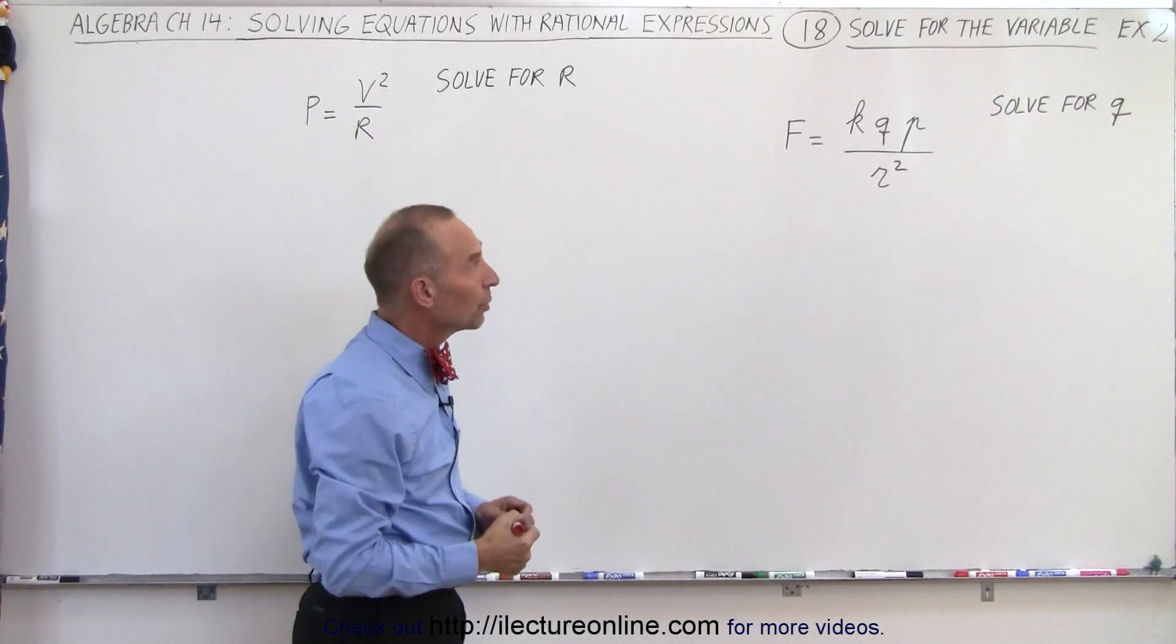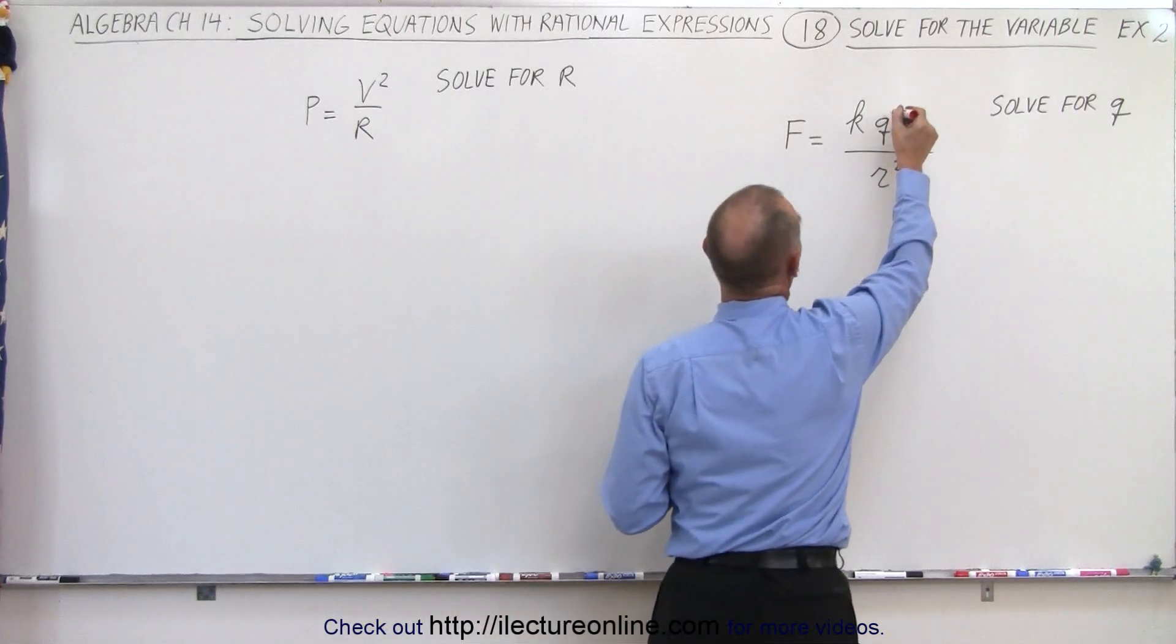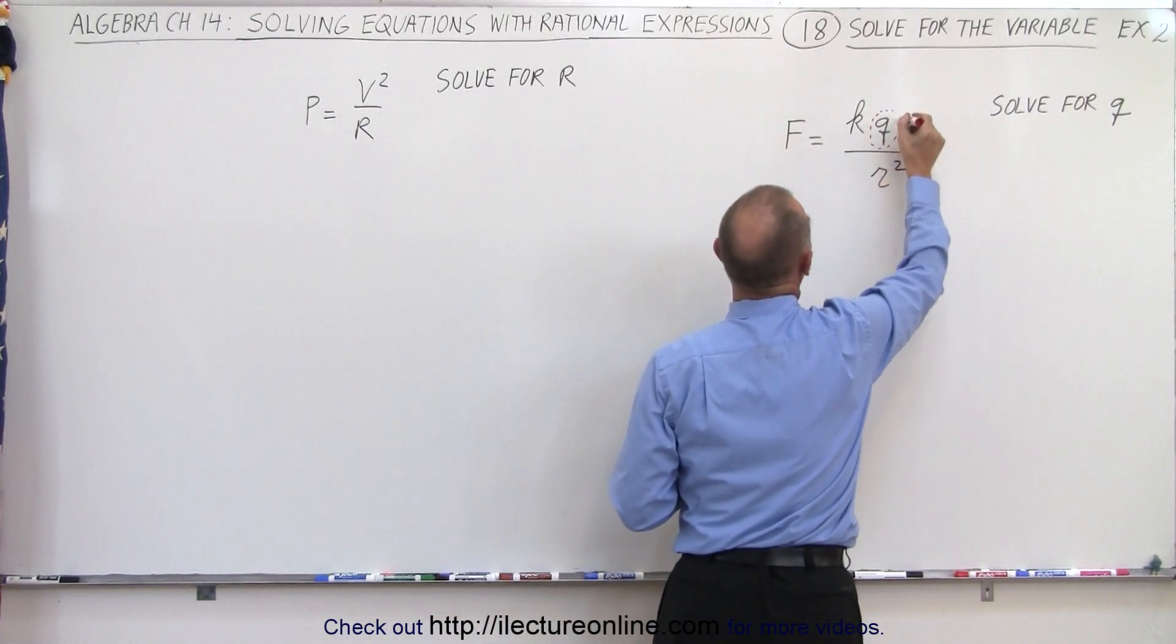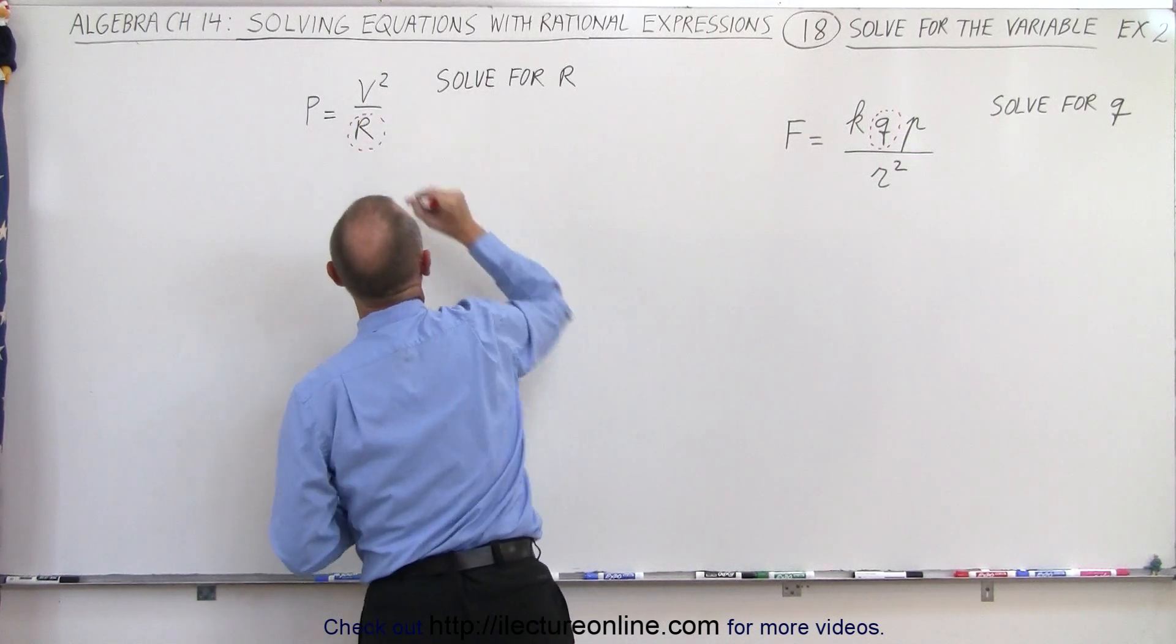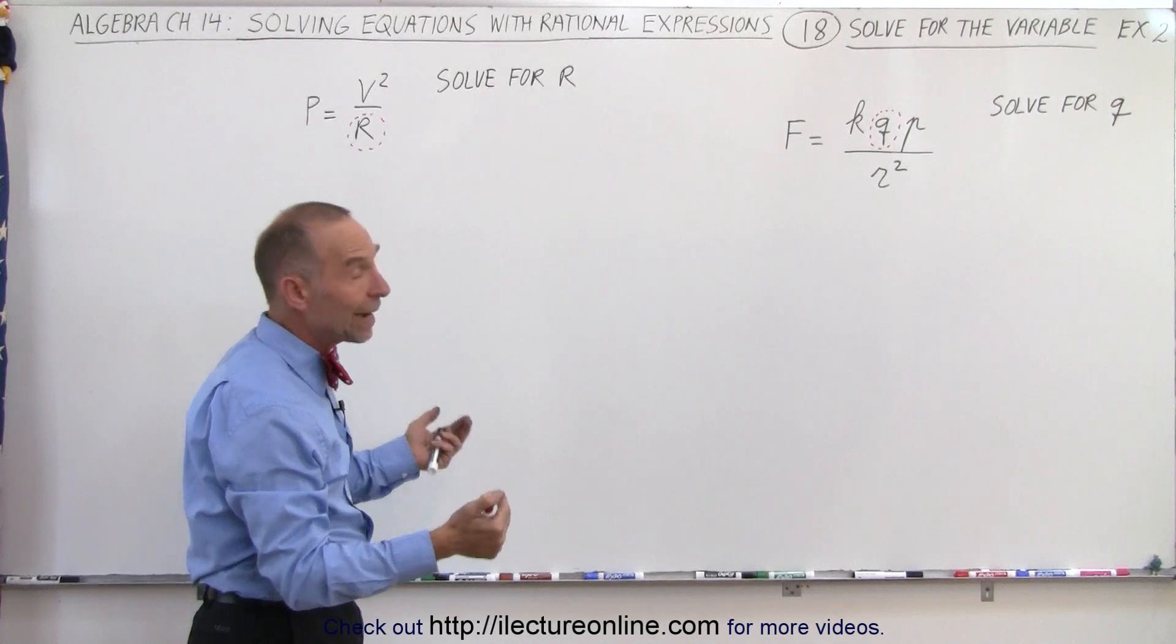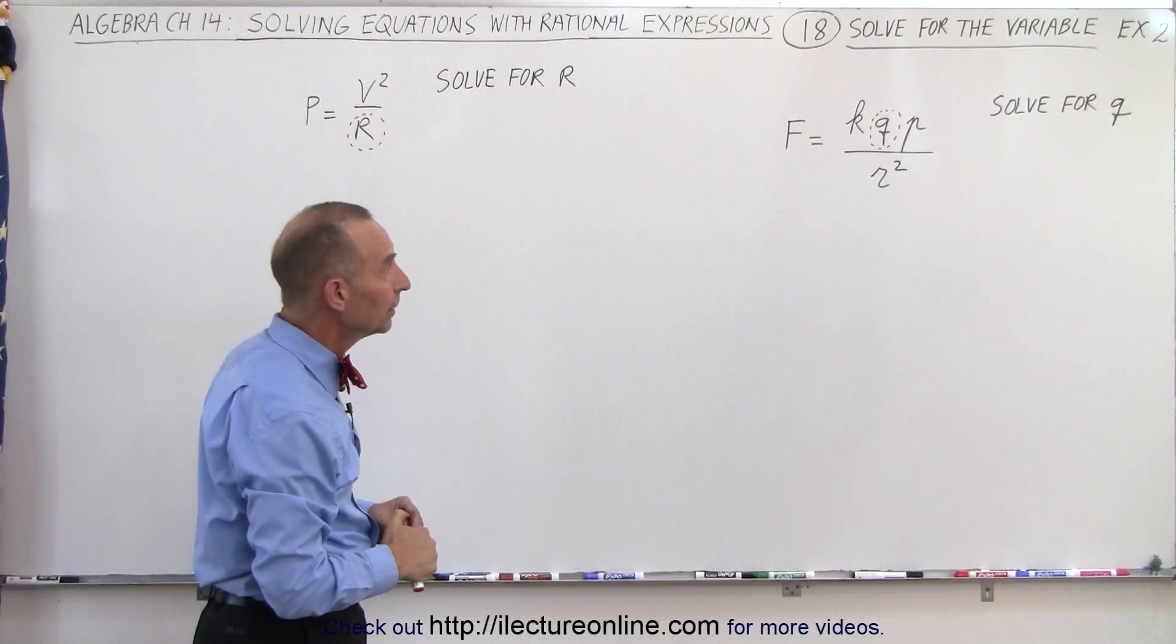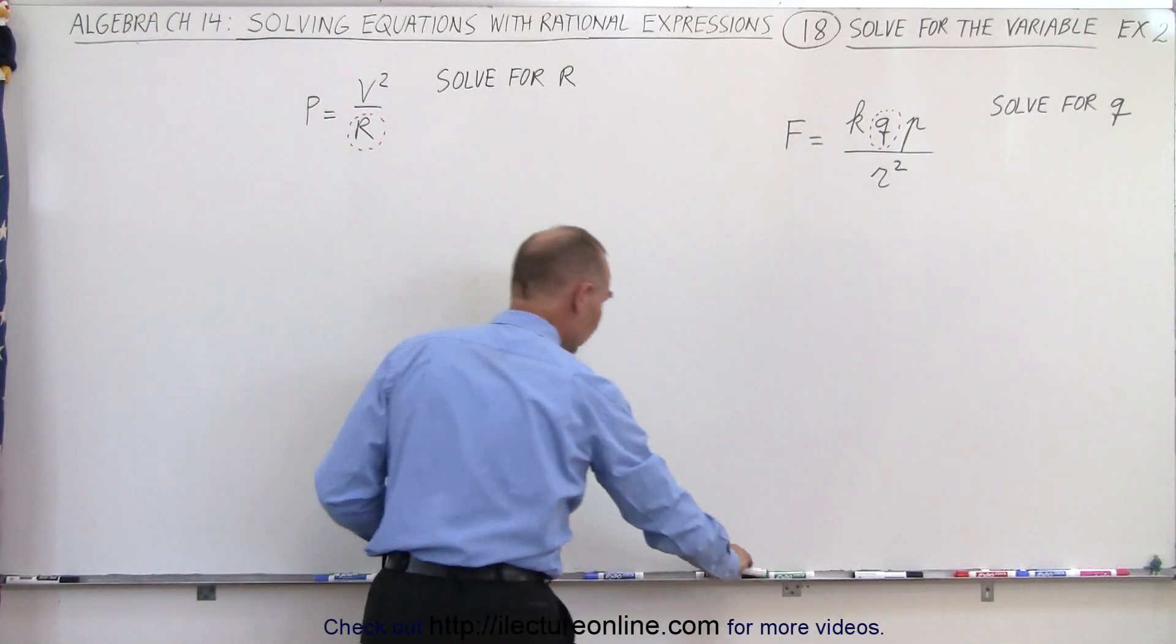Now there's a couple of techniques that we can use, but first of all what I like to do is circle the variable that I'm solving for, that makes it easier to take a look at this. Secondly, we could use the technique where we multiply both sides of the equation by the lowest common denominator, or we can use what we call the cross multiplication method.